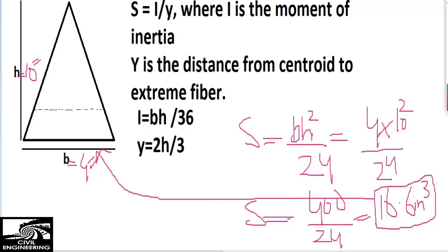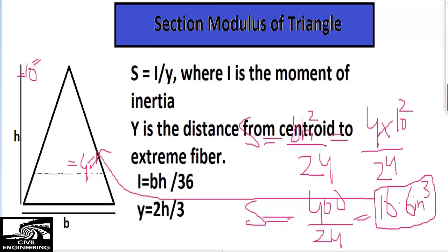So this is the section modulus of this triangle with width B equal to 4 inches and height equal to 10 inches. This is the concept behind the section modulus — how to find the section modulus of a triangle. For any shape, you can find it using the basic formula S = I/y, where y is the distance from the centroid to the extreme fiber. Please subscribe our channel for more civil engineering videos. Thank you.